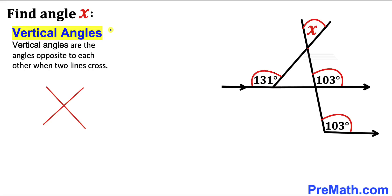Now let's recall the vertical angles theorem. Vertical angles are the angles opposite to each other when two lines cross each other. As you can see in this diagram, these are our two vertical angles and they are congruent to each other. Therefore in our case this angle and this angle are vertical angles, and if this angle is x, this angle has got to be x as well.